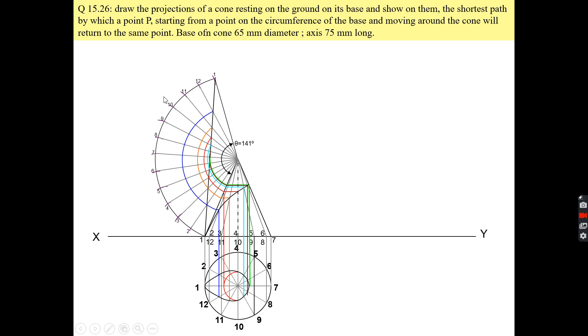Point P is moving from point 1 around the cone toward point 1. So after drawing front view, top view, and development, you do not have to remove those parts which are above this line because you are not cutting sections here.